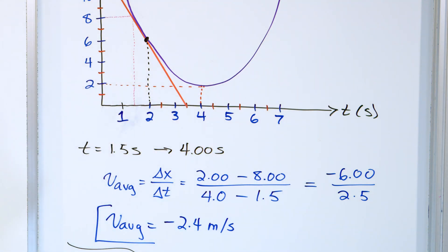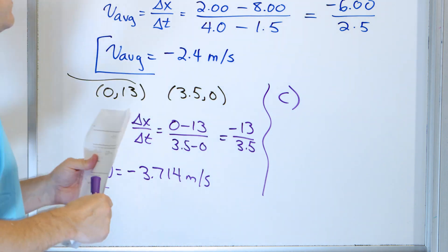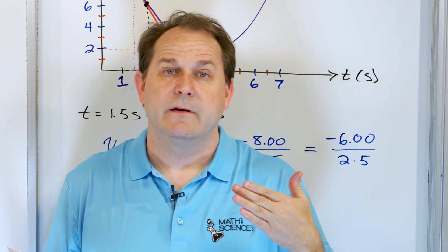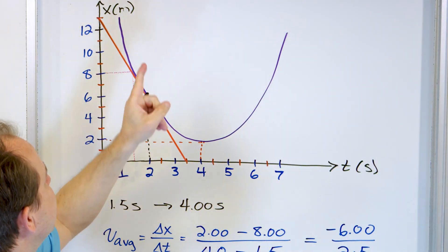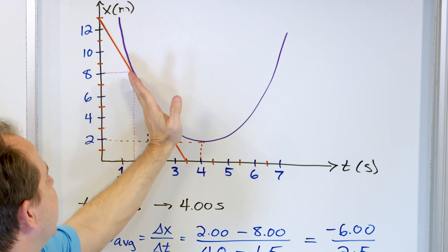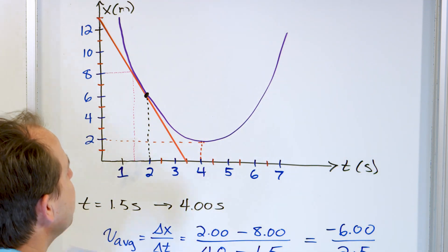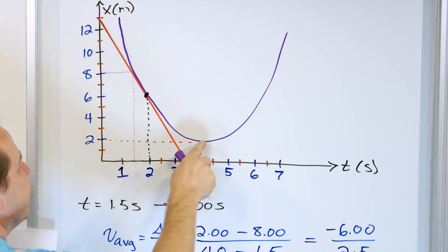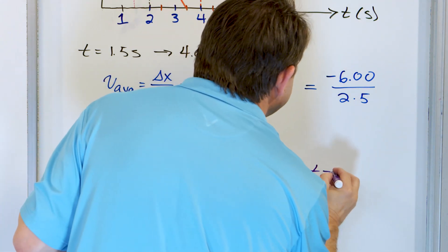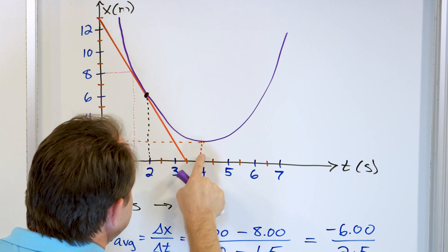Part C says: for what value of t is the velocity equal to zero? The velocity is equal to zero when the slope of the tangent line to the position graph is zero. The purple graph is the position graph. Here the slope is negative — negative velocities. Here the slope is positive — positive velocities. But right at the turnaround point, the slope is exactly zero, so the velocity instantaneously is zero. We can see that t equals 4 seconds is exactly when the slope is zero. The velocity equals zero at t equals 4 seconds — no calculations needed, we can just see it from the graph.